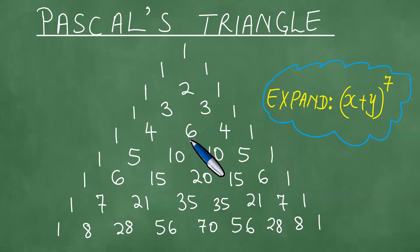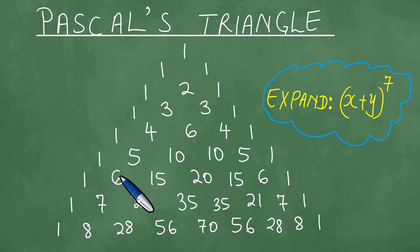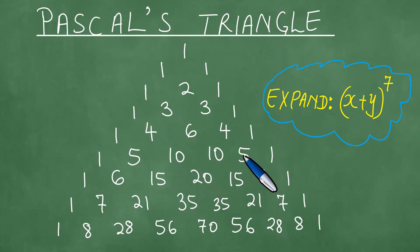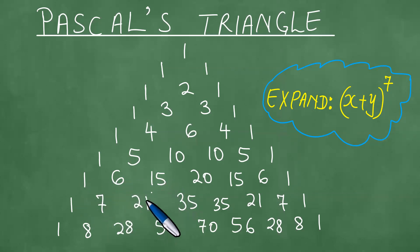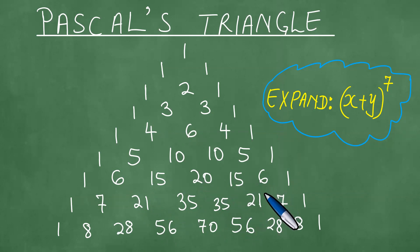Continuing: 1 plus 4 is 5, 4 plus 6 is 10, 6 plus 4 is 10, 4 plus 1 is 5 — put 1s on the sides. Then 1 plus 5 is 6, 5 plus 10 is 15, 10 plus 10 is 20, 10 plus 5 is 15, 5 plus 1 is 6 — put 1s on the sides. Then 1 plus 6 is 7, 6 plus 15 is 21, 15 plus 20 is 35, 20 plus 15 is 35, 15 plus 6 is 21, 6 plus 1 is 7 — put 1s on the sides.